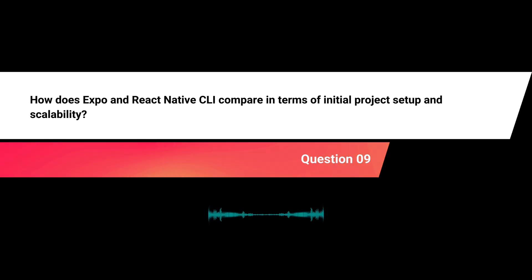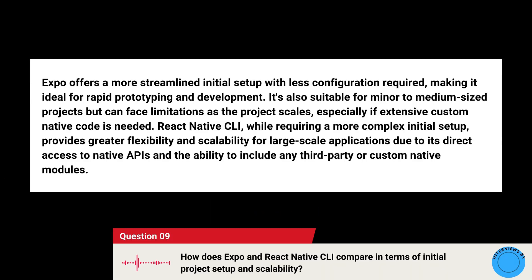How does Expo and React Native CLI compare in terms of initial project setup and scalability? Expo offers a more streamlined initial setup with less configuration required, making it ideal for rapid prototyping and minor to medium-sized projects, but can face limitations as the project scales, especially if extensive custom native code is needed. React Native CLI, while requiring a more complex initial setup, provides greater flexibility and scalability for large-scale applications due to its direct access to native APIs and the ability to include any third-party or custom native modules.